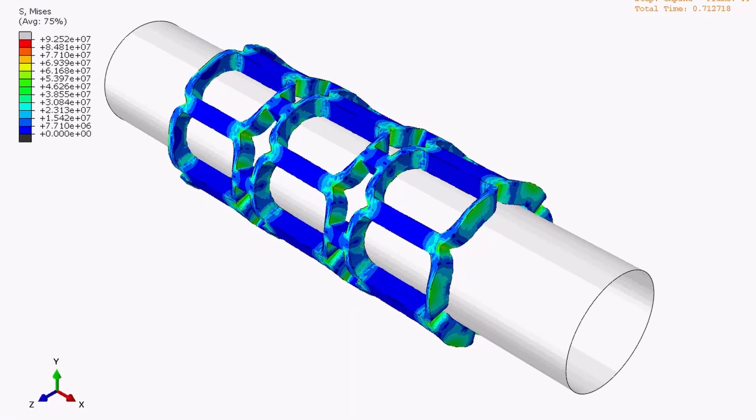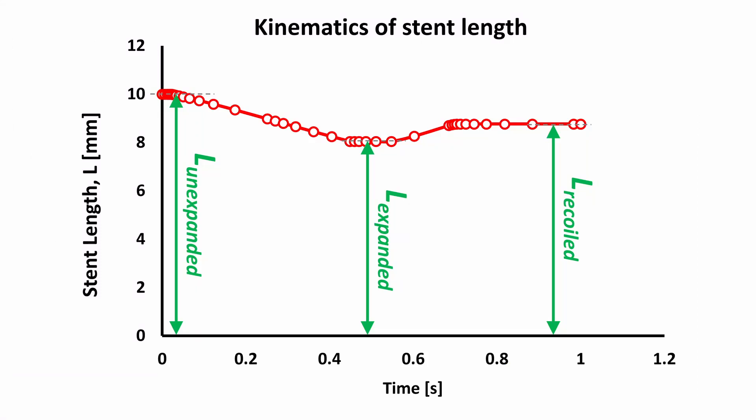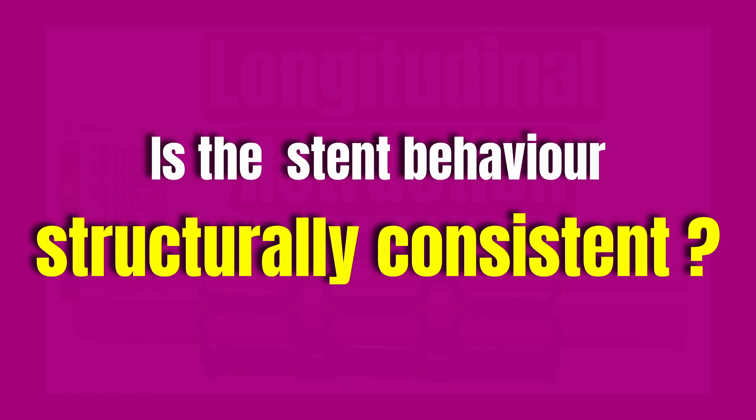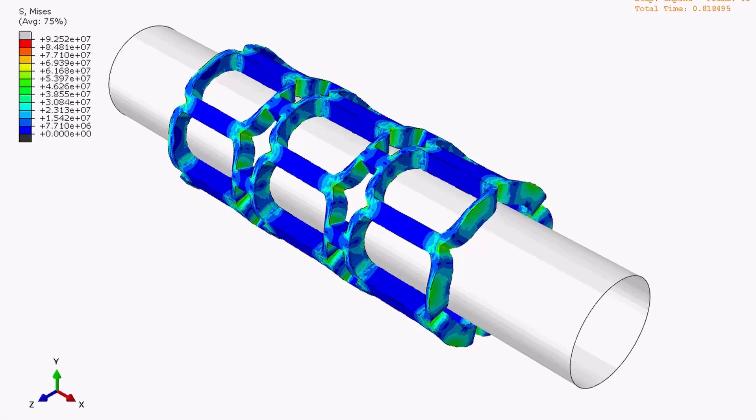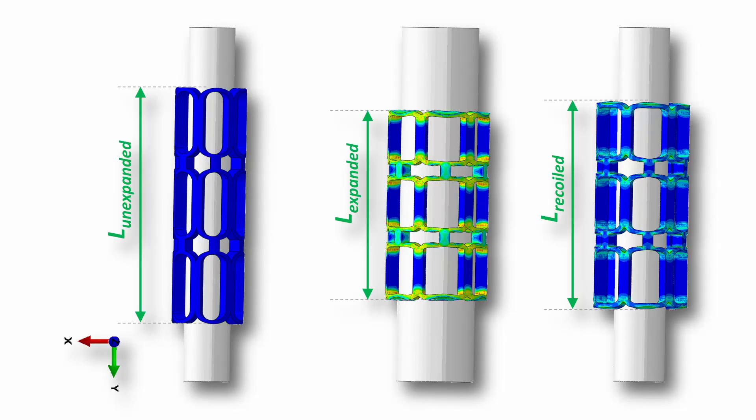You might have clicked on this video because you've just finished running your stent simulation, generated some excellent results, and want to know if the stent behavior is actually consistent with what you'd expect structurally. One of the parameters you need to use to do this is called longitudinal retraction. So this is what I want to show you in this video. Let's sit back and relax as we get started with this modeling.